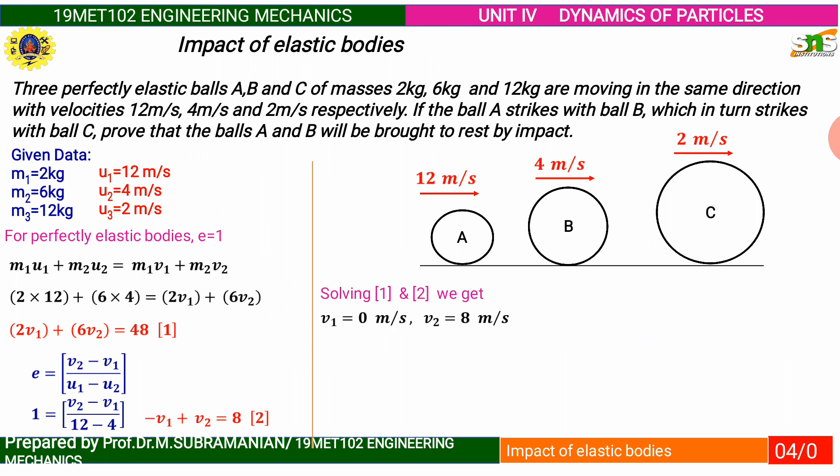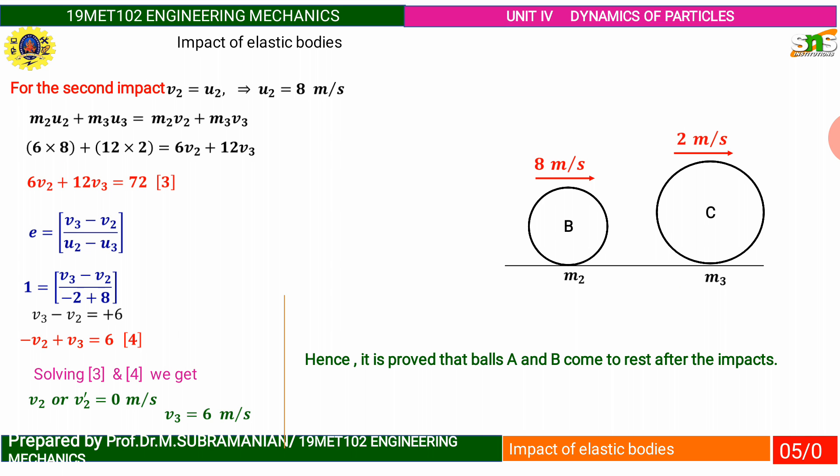Same manner we have to calculate for balls B and C. For the second impact, V2 equals U2, that is U2 equals 8 meters per second. Then M2 U2 plus M3 U3 equals M2 V2 plus M3 V3.